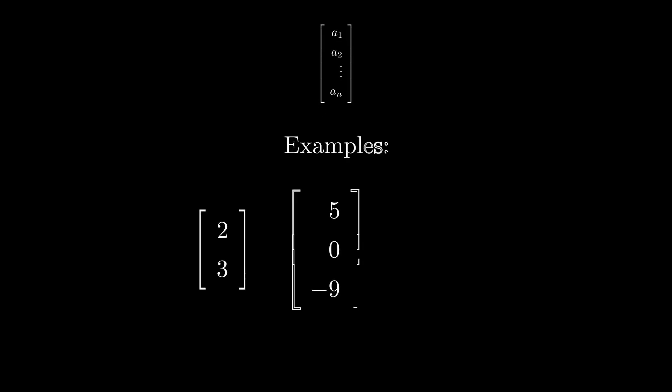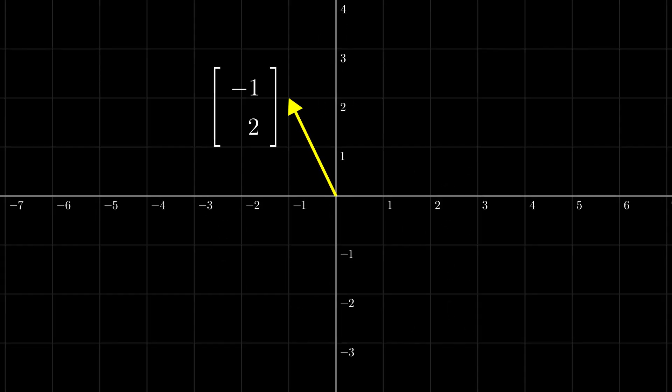If we have an n by 1 matrix, we call it a column vector. We can graph these like any other vector. These are useful, as one of the ways we can represent a state of a quantum computation is through a column vector.